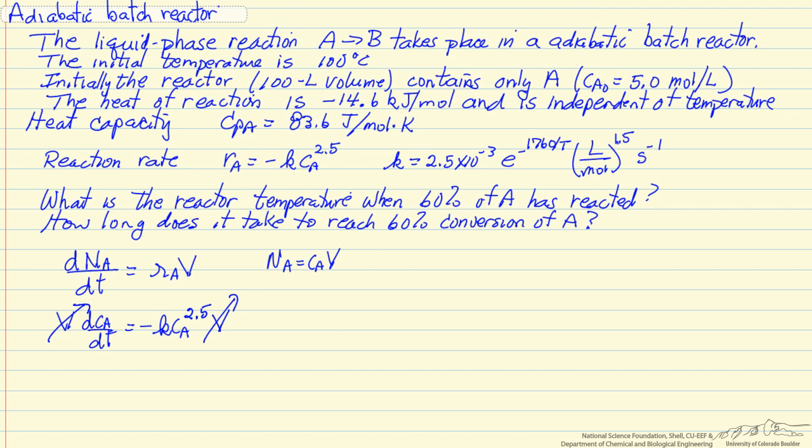We can likewise write the energy balance for this system. The energy balance now is the number of moles of A, heat capacity of A, plus the number of moles of B, heat capacity of B, because of course the number of moles of A and B are changing with time. Heat capacities are constant.